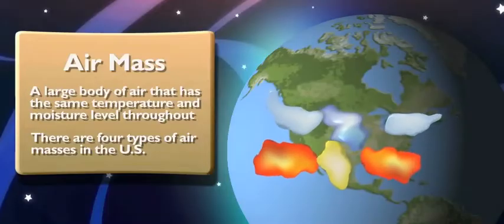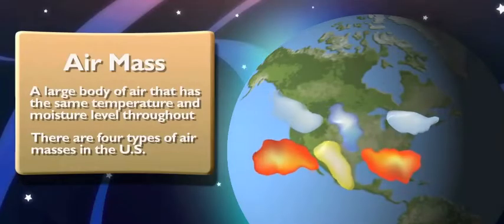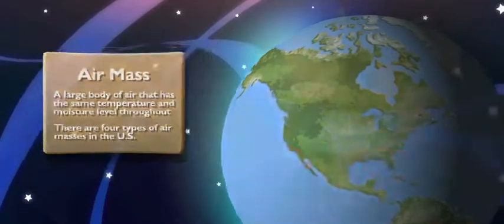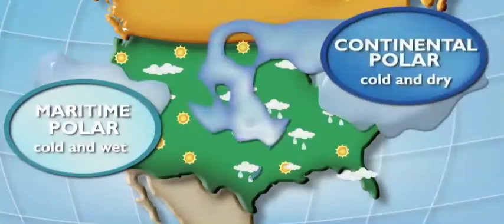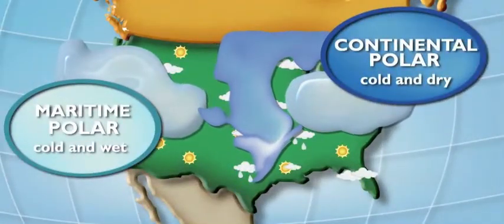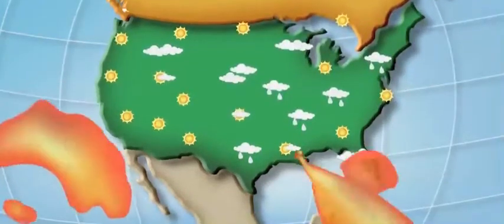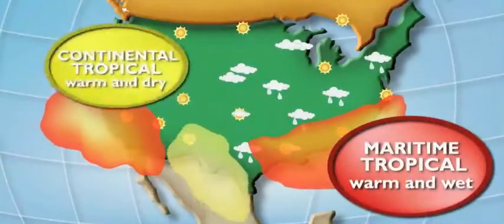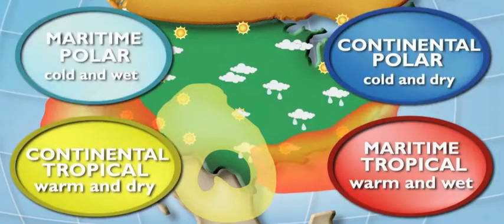So, what are their names? Well, two are cold and two are warm. The two cold air masses are the maritime polar air mass and the continental polar air mass. What about the two warm air masses? The two warm air masses are called the maritime tropical air mass and the continental tropical air mass. So, which ones can I thank for the snow day?